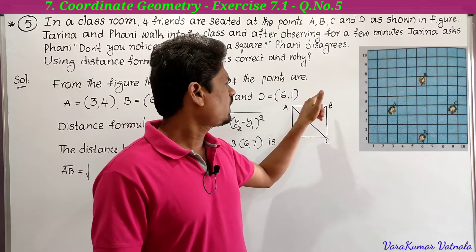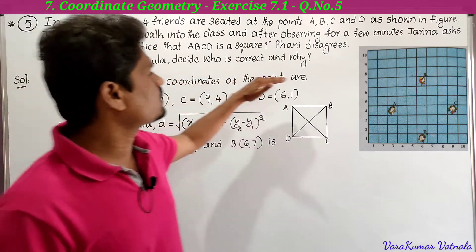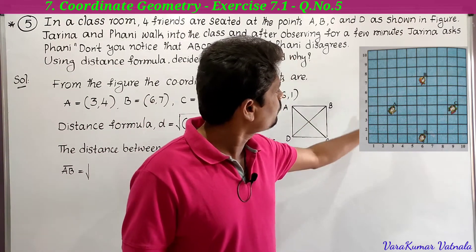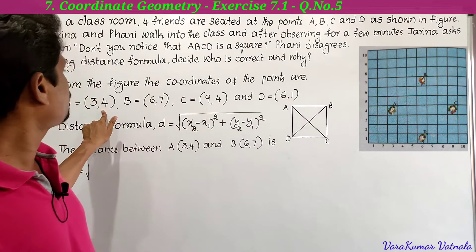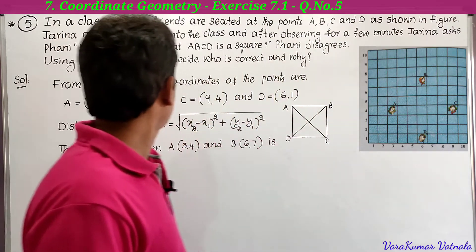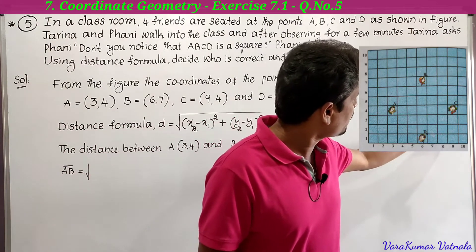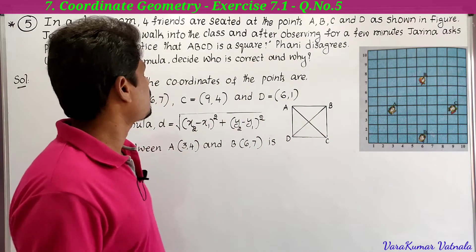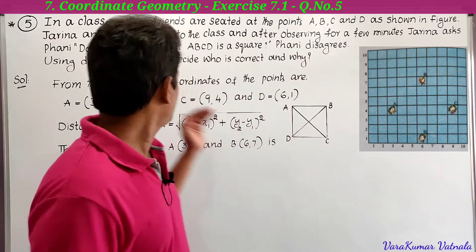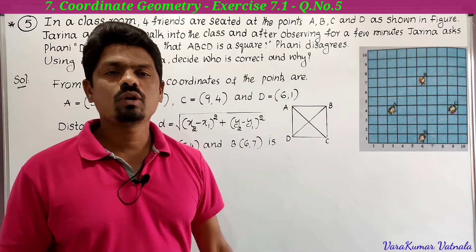Now we have to find the coordinates from the figure. From the figure, the coordinates of the points are: A is (3, 4), so x is 3 and y is 4. B is (6, 7), so x is 6 and y is 7. C is (9, 4), so x is 9 and y is 4. And D is (6, 1), so x is 6 and y is 1. These are the coordinates of the four points.